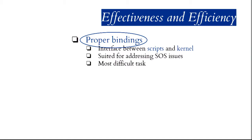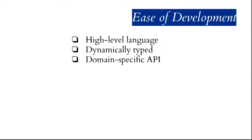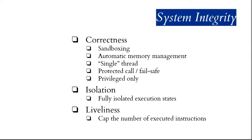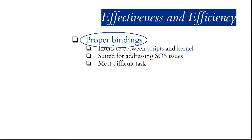Proper binds can also help us achieve the other issues in developing a scriptable operating system. By having proper binds, we can deliver domain-specific APIs to user scripts and perform verifications on the bind side. But it is also the most difficult task in scripting the operating system. For example, in our case on NetBSD, we have a kernel environment to script the kernel, but we lack bindings to extend subsystems using scripts.